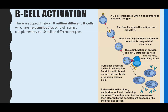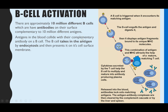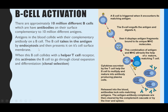For B-cell activation: you have approximately 10 million different lymphocytes, each able to create different antibodies. The antibodies on the surface of these B-cells are complementary to 10 million different antigens. When antigens from a foreign particle or pathogen collide with their complementary antibody on a B-cell, the B-cell takes in that antigen by endocytosis and presents it on its cell surface membrane. When this B-cell collides with a helper T-cell receptor, it activates the B-cell to undergo clonal expansion and differentiation, sometimes known as clonal selection.